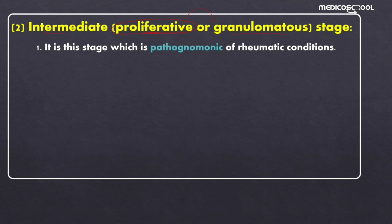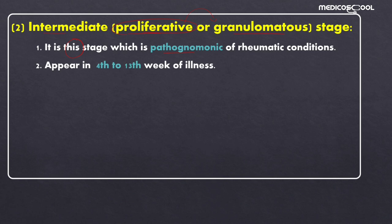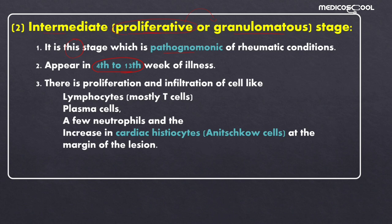Although Aschoff bodies can exist in three stages, it is this intermediate stage which is the pathognomonic stage of rheumatic fever. It appears at about 4 to 13 weeks of illness, in contrast to the early stage which appears within the fourth week. There is proliferation and infiltration of cells including lymphocytes — mostly T lymphocytes — plasma cells, a few neutrophils, and a marked increase in cardiac histiocytes also known as Anitschkow cells at the margin of the lesions, resulting in granulomatous-like lesions.